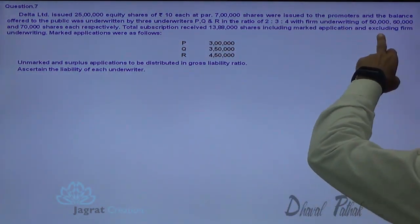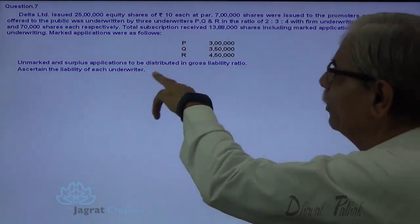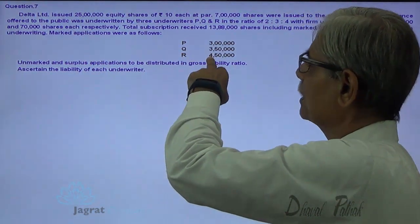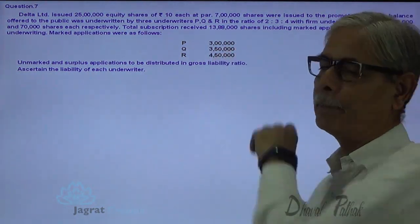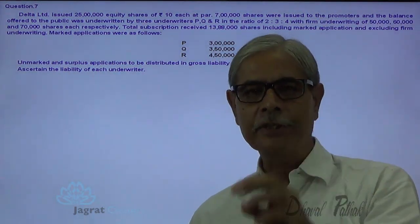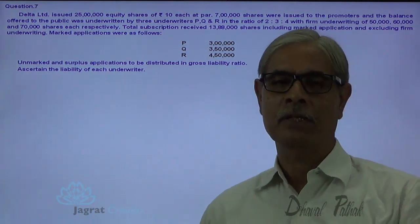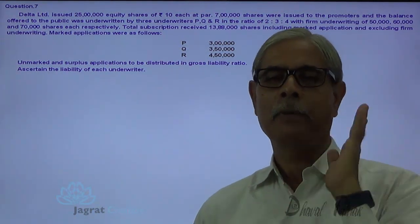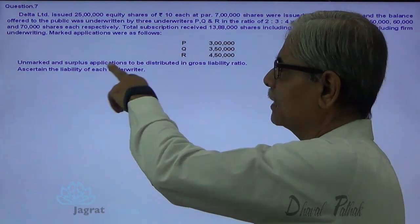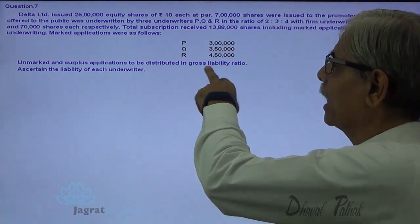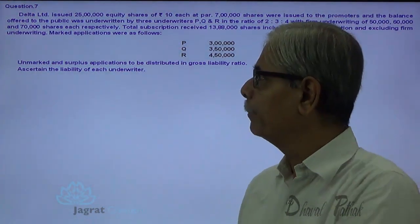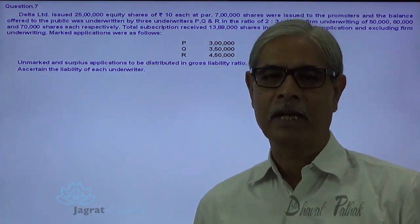Shares including marked applications, excluding firm underwriting — the marked applications are as follows. This is the number of applications received which includes marked applications but other than firm applications. Unmarked and surplus applications are to be distributed in proportion of gross liability, as stated in the liability of each underwriter.